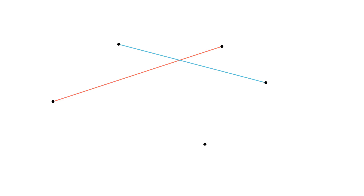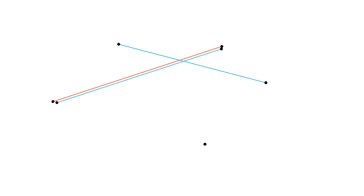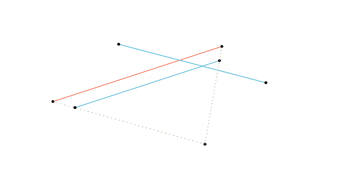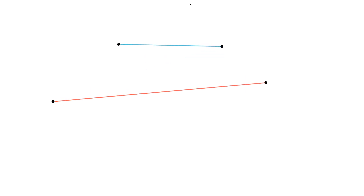As a matter of fact, the first center of spiral similarity that we looked at is a center of spiral similarity for the two diagonals of the initial quadrilateral. The second center of spiral similarity is the center of spiral similarity for the other two sides of the initial quadrilateral.